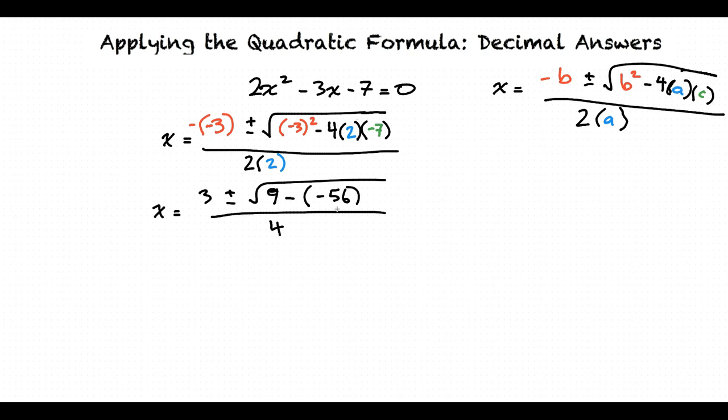9 minus negative 56 equals positive 65. So we have x = (3 ± √65) / 4.